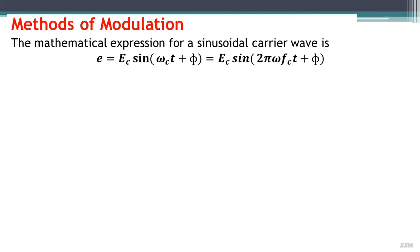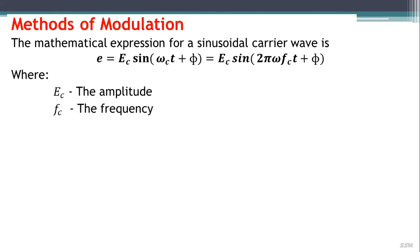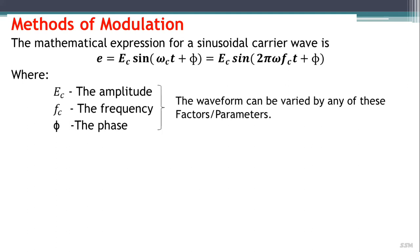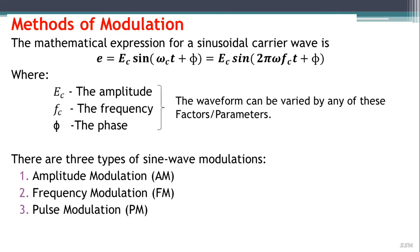The mathematical expression for a sinusoidal carrier wave is given by an equation where EC is the amplitude, FC is the frequency, and PHI is the phase. The waveform can be varied by any of these parameters. Accordingly, there are three types of sine wave modulations: amplitude modulation, frequency modulation, and phase modulation.